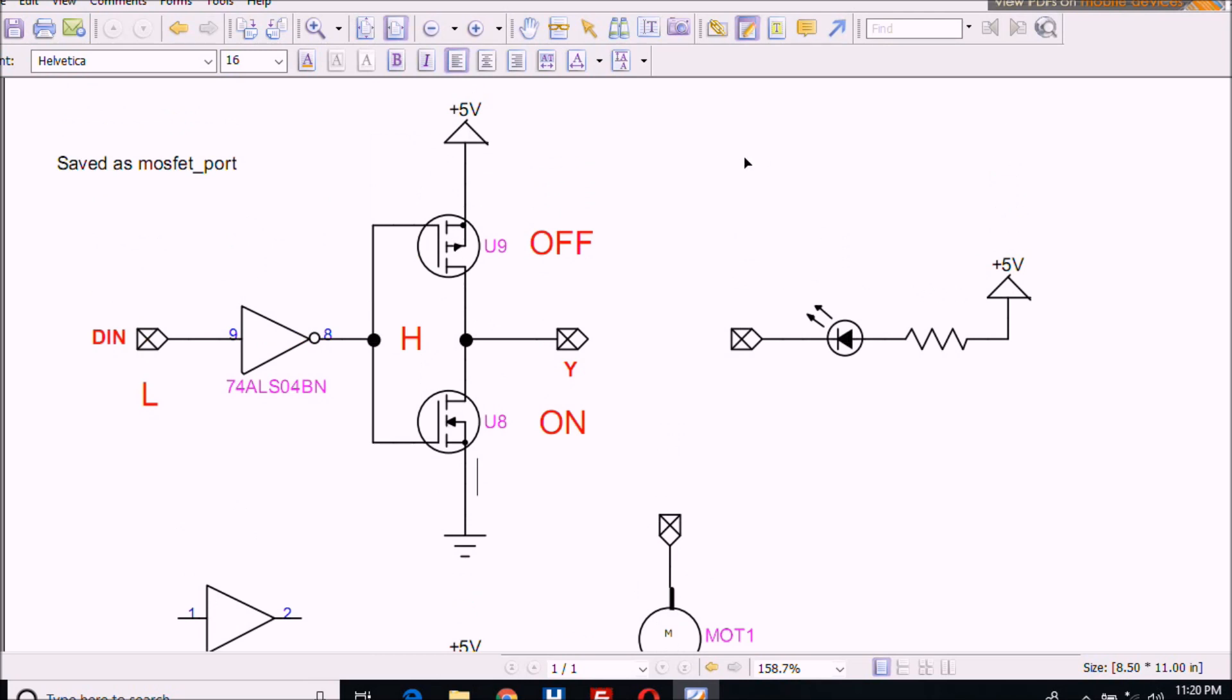Let's see how it works. You have a low in that's going to be inverted to a high. The high is going to turn off U99 but it's going to switch on U8 and create a current path to ground. If I had this LED connected to VCC, the LED would turn on.